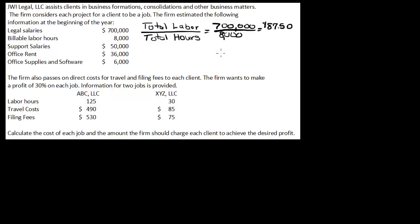That equals $87.50 per hour. So that's the first part. Now we need to figure out how to cover all these other costs as well. If we just bill for our labor, we'll recoup the cost of the labor, but we won't recoup the cost of the support salaries, the office rent, and the office supplies and software. So we need to come up with a rate for these items too.